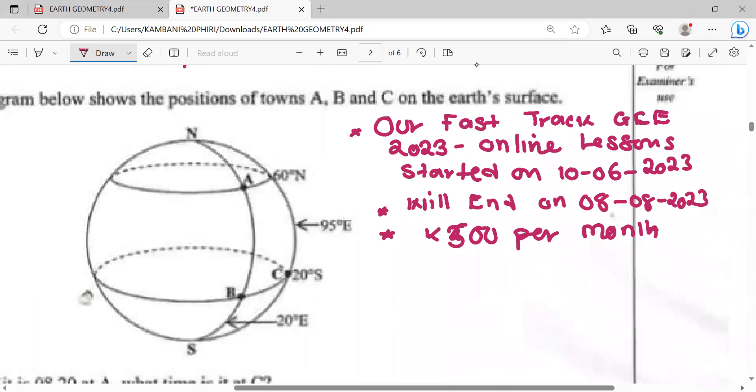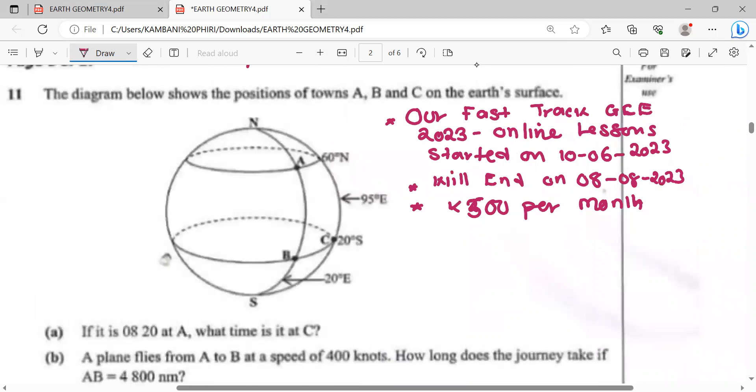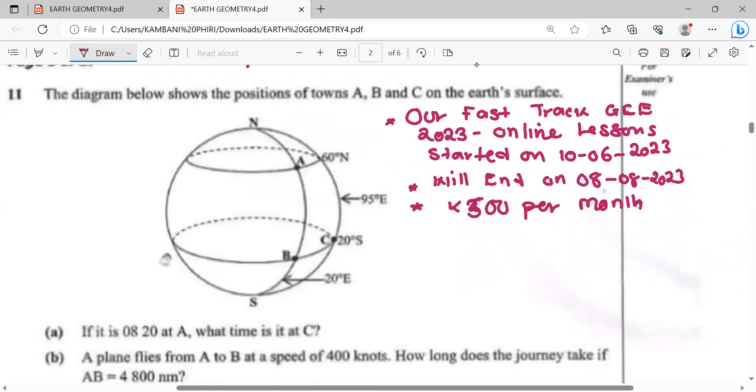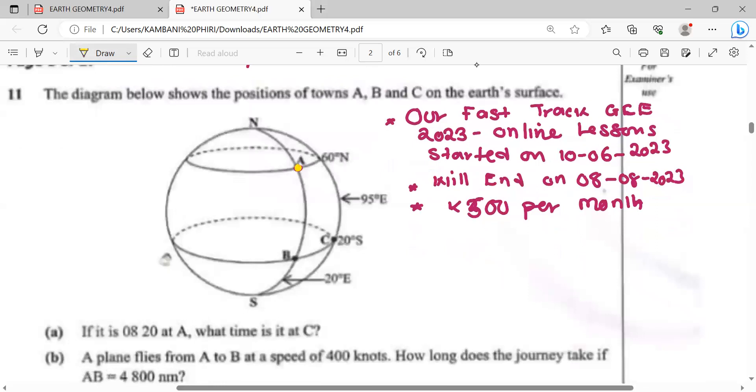The question reads: the diagram below shows positions of towns A, B, and C on the Earth's surface. If it is 0820 hours at point A, what time is it at B?